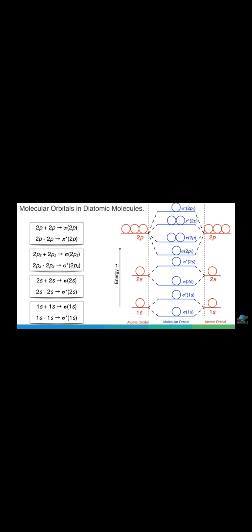When 1s and 1s atomic orbitals are combined, two molecular orbitals are formed: the first is the sigma 1s molecular orbital, and the second is the sigma star molecular orbital.